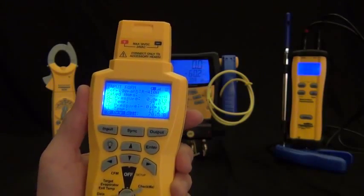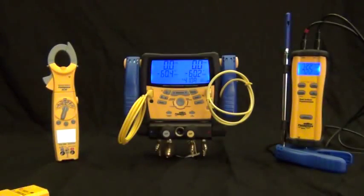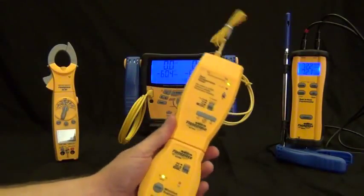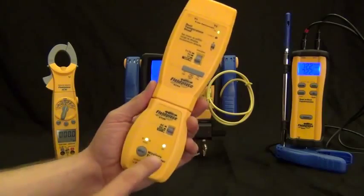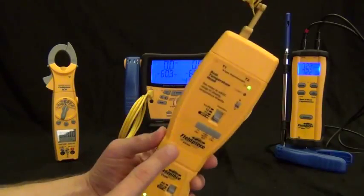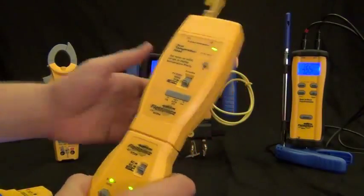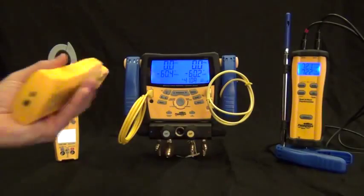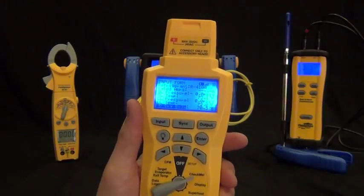Then we have outdoor dry bulb. Outdoor dry bulb is being sent from an external sensor with a wireless transmitter, and this is sending wirelessly to the SMAN4 and the SMAN4 is sending that wirelessly to the HG3.